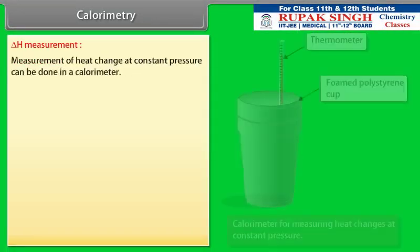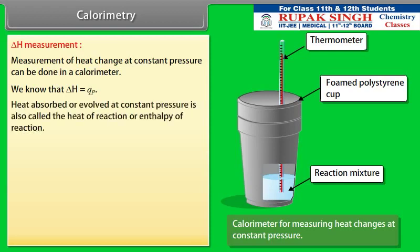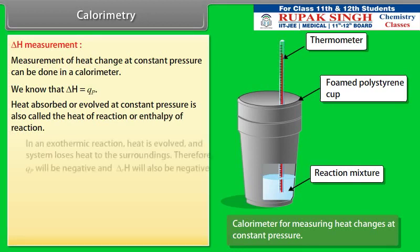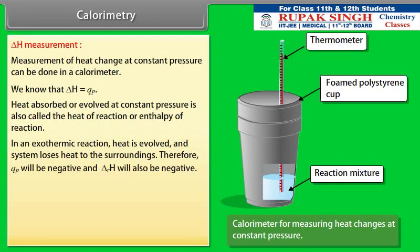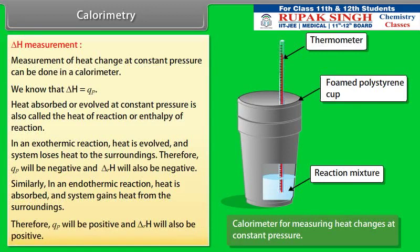ΔH measurement: heat change at constant pressure can be done in a calorimeter. We know that ΔH = QP. Heat absorbed or evolved at constant pressure is called the heat of reaction or enthalpy of reaction. In an exothermic reaction, heat is evolved and the system loses heat to the surroundings; therefore QP will be negative and ΔRH will also be negative. In an endothermic reaction, heat is absorbed and the system gains heat from the surroundings; therefore QP will be positive and ΔRH will also be positive.